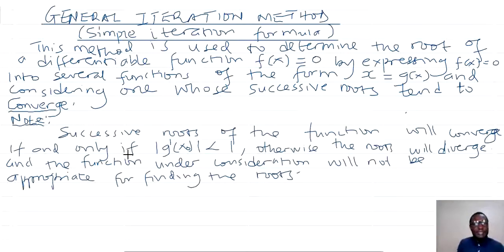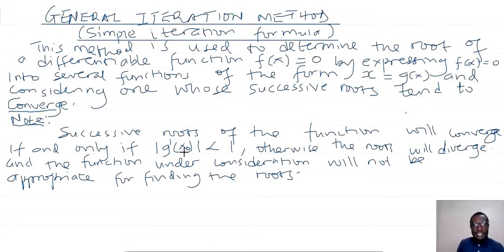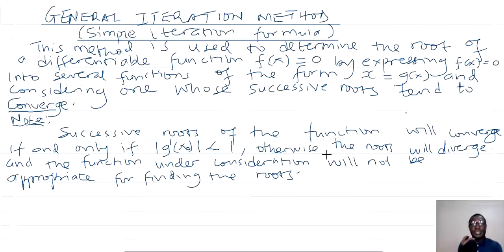Successive roots of the function will converge if and only if the magnitude of the derivative of this function, expressed at the initial value, should be less than 1. Otherwise, the roots will diverge and the function under consideration will not be appropriate for finding the roots.